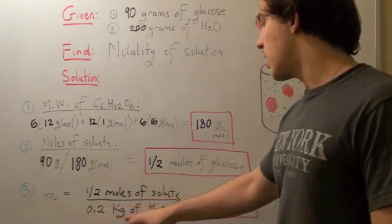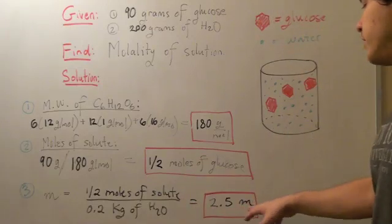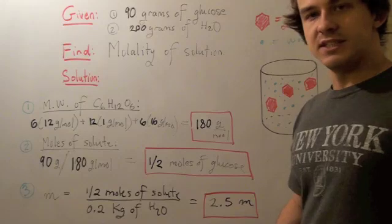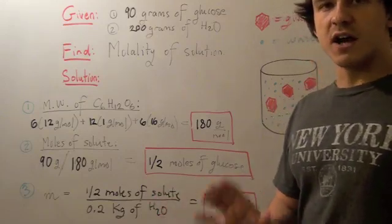We get 0.2 kilograms of H2O, the solvent, and we get 2.5 molality, or moles per kilogram. And that's our final answer.